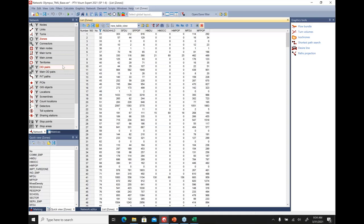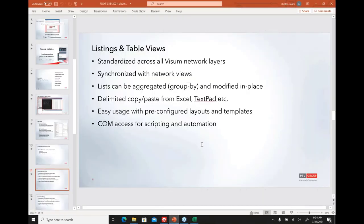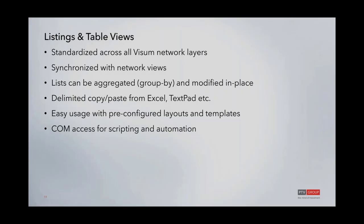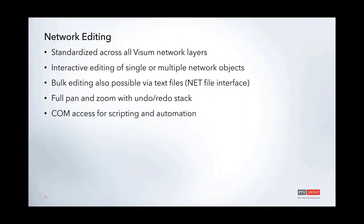Network editing is also standardized across all vZoom network layers. Once familiar with the editing workflow for one object, it's essentially the same across all — once you know how to insert a node, you'll know how to insert a link, stop points, line routes, and so forth. Interactive editing can be done for single or multiple network objects, with spatial or polygon selection and editing all supported.